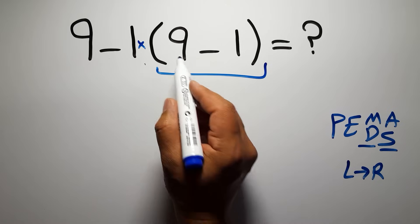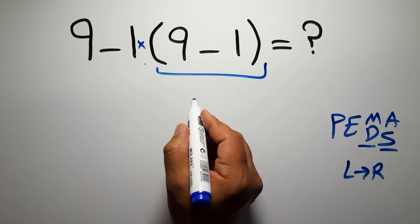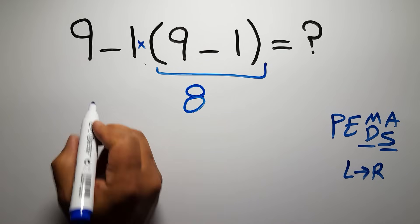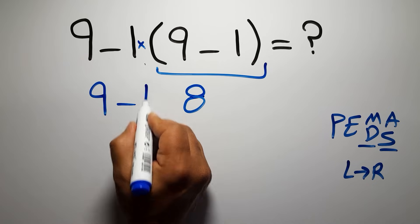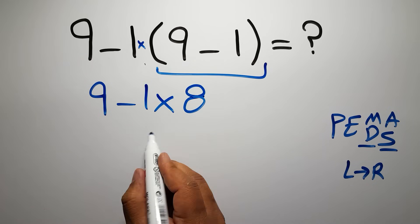Inside this parenthesis, we have 9 minus 1, which gives us 8, so 9 minus 1 times 8.